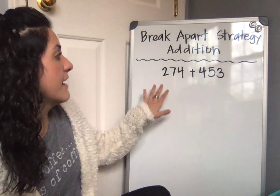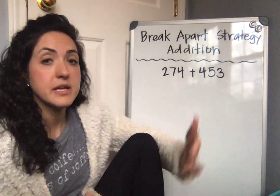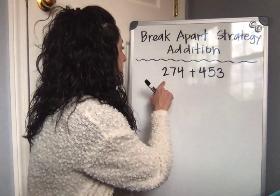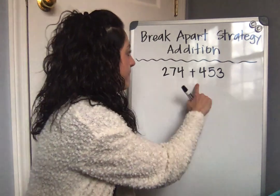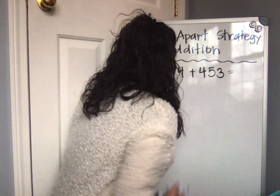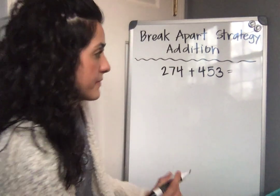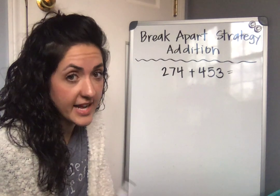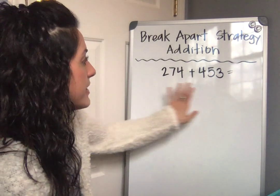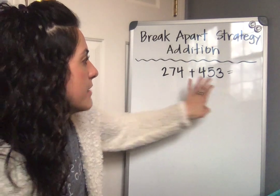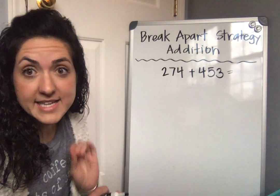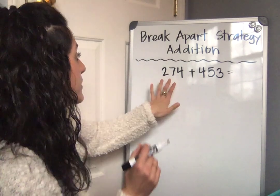So I've written an equation on the board. I've written 274 plus 453. When I'm using the break apart strategy, I always look at the first number and then look at the second number, and then I break them both into expanded form.